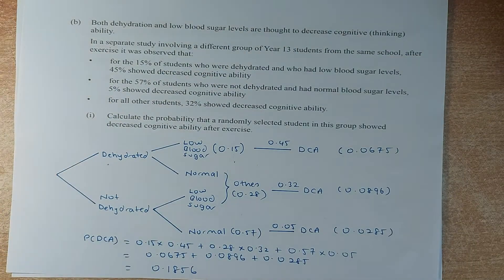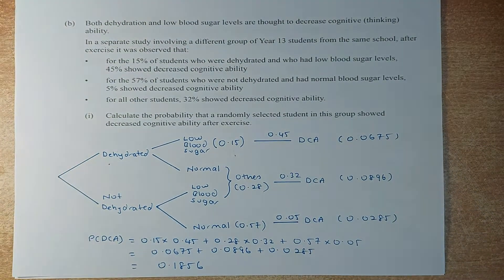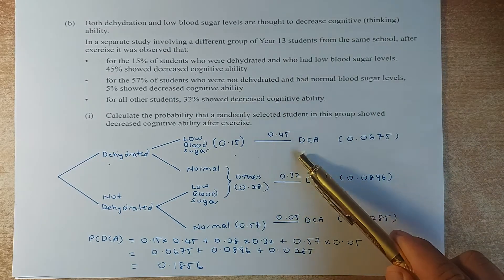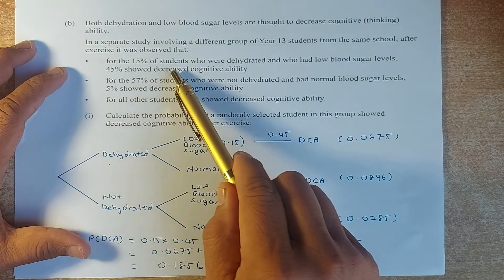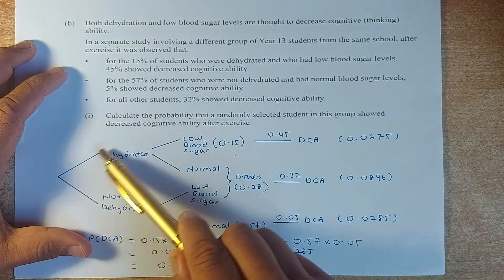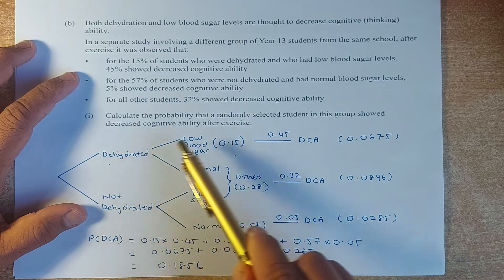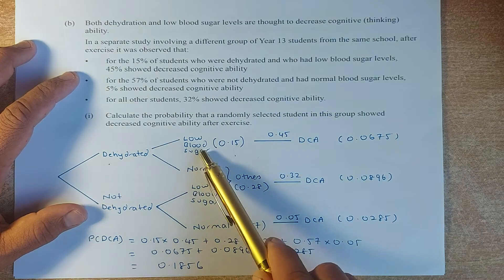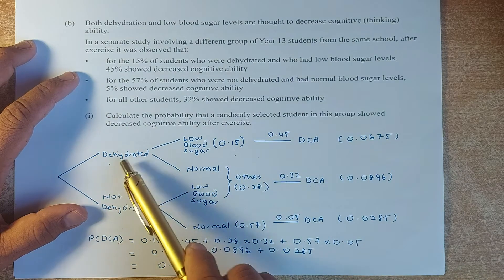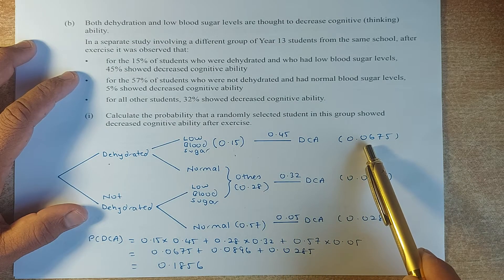Now we look at question B, which is a bit harder. Both hydration and low blood sugar are said to decrease cognitive thinking ability — represented as DCA. In another school, 15% of students were dehydrated and had low blood sugar, and of those, 45% show decreased cognitive ability. So the probability of dehydrated, low blood sugar, and DCA is 0.15 × 0.45 = 0.0675.